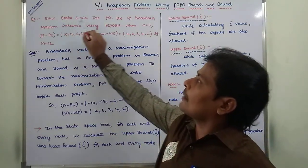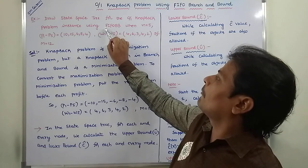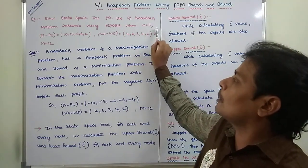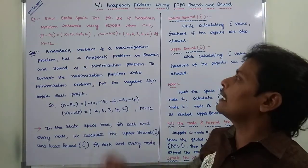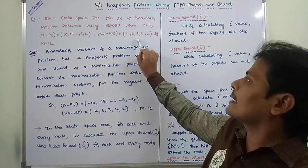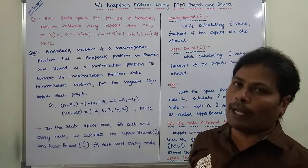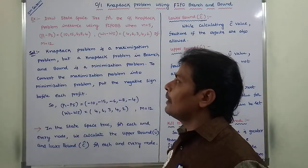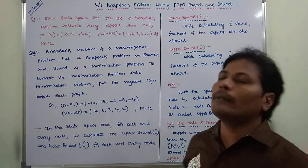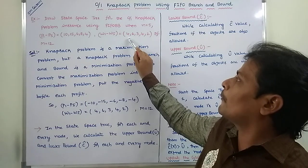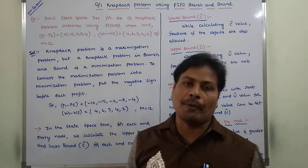The given problem is: draw the state space tree for the 0/1 knapsack problem instance using FIFO branch and bound, where N is equal to 5. The profits P1 to P5 are equal to 10, 15, 6, 8, and 4. The weights W1 to W5 are 4, 6, 3, 4, and 2. The capacity of the knapsack M is equal to 12.